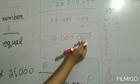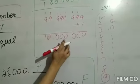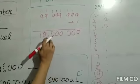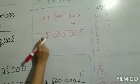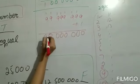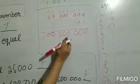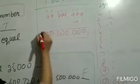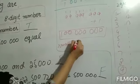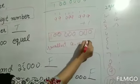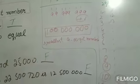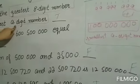आपने one add किया, तो आपके पास कितने digit number बना: one, two, three, four, five, six, seven, eight, nine — nine digits number बन गया। तो smallest nine-digit number 100000000 बन गया। जब one add किया तो nine-digit number बना, इसलिए यह statement क्या है? True है।